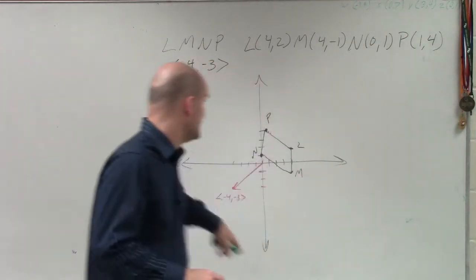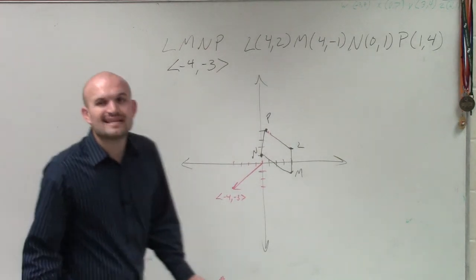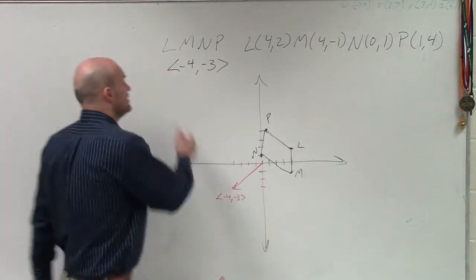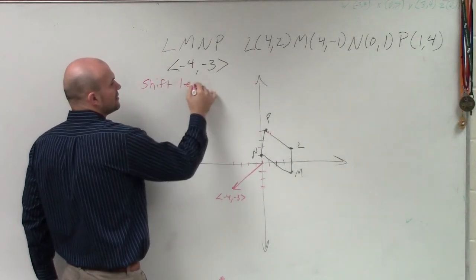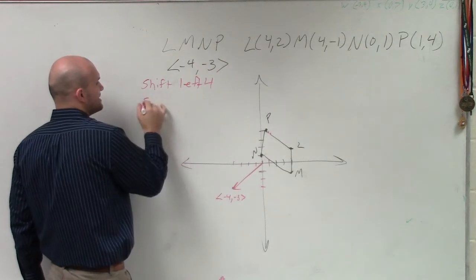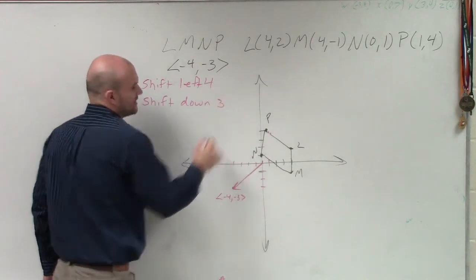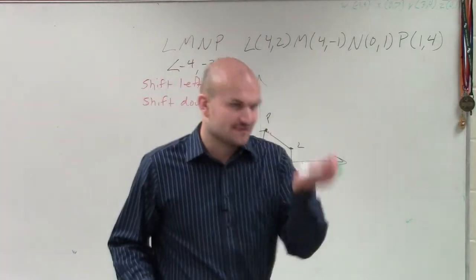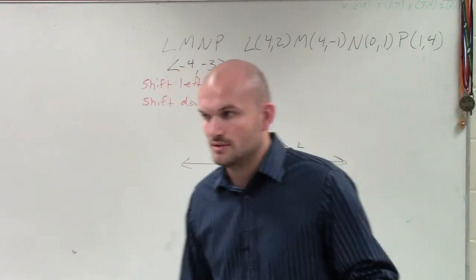So what is that transformational vector telling you to do? That's telling you to shift your figure left 4 units. And then it's telling you, since it's negative, to shift down 3 units, right? Because it's negative, so you go down 3. And it's negative 4, so you go left 4.